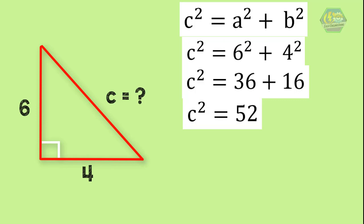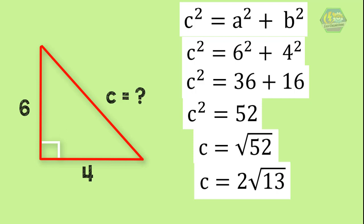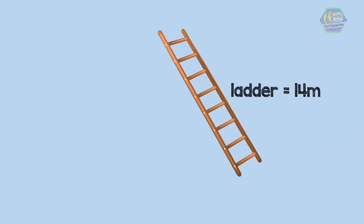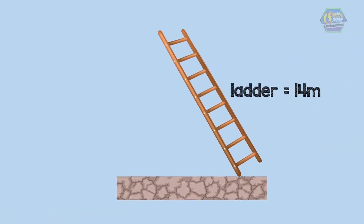So c² is equal to 52. In order to find c, we need to take the square root of both sides. Therefore the square root of 52 is 2√13. So the hypotenuse is equal to 2√13, or approximately 7.2.